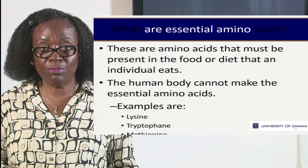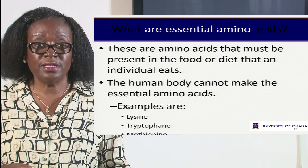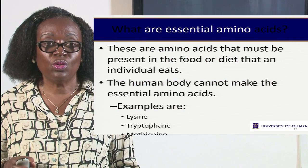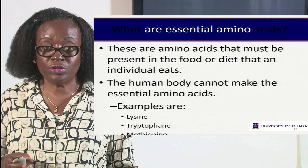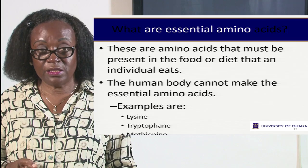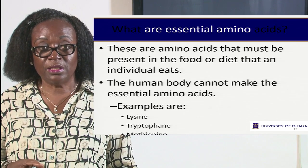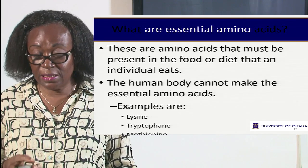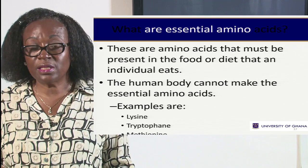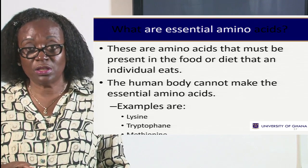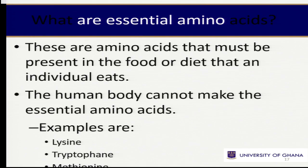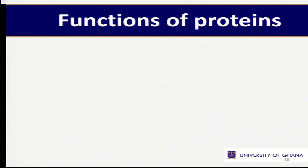The rest can be made in the body and therefore they are called non-essential amino acids. Examples of the essential amino acids are lysine, tryptophan and methionine. Tryptophan, for example, is lacking in maize. So if you eat kenkey alone without any fish, you need to add some small amount of beans or meat or fish to be able to get the essential amino acids.